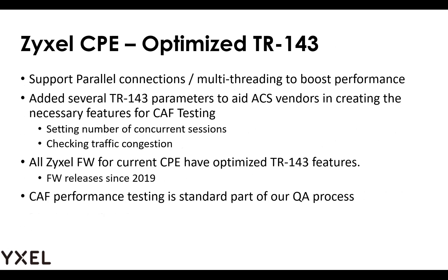Over the past two years, we've worked diligently across all our CPEs. We have optimized our TR-143 features by adding parallel connections — multi-threading — that really boosts performance. Starting in 2019, all our current CPEs have firmware with this optimized TR-143 software. We've also added additional TR-143 parameters that assist ACS vendors to manage testing information, such as remotely setting the number of multi-threading operations and checking for traffic congestion.